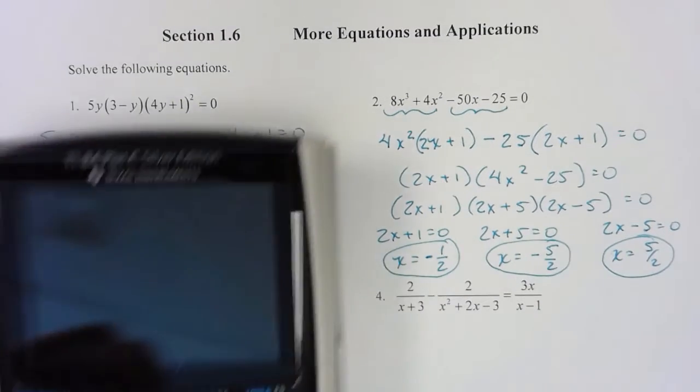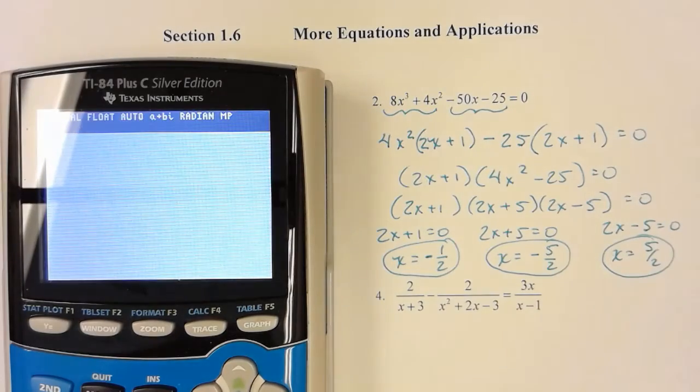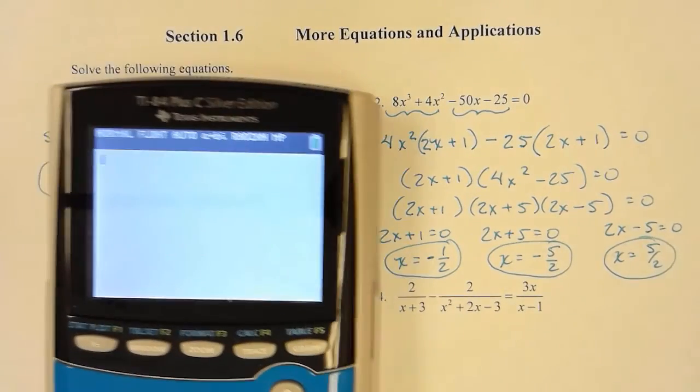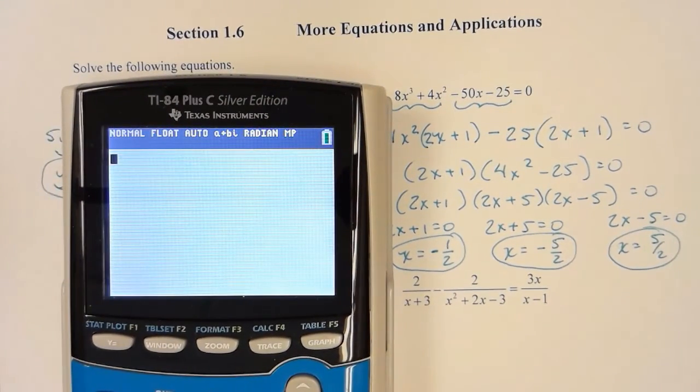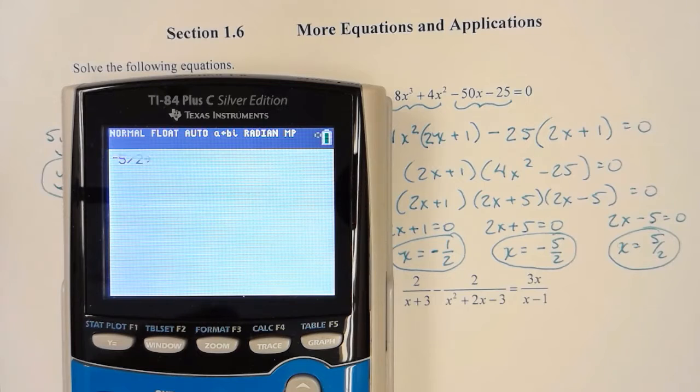And guys you can always check. You do need to check. See if I can get this there. I'm going to store in a negative 5 halves. So a negative 5 divided by 2. The STO is right above your on key. If you press it you get an arrow. Tell it the variable you want. And then you have to press enter.